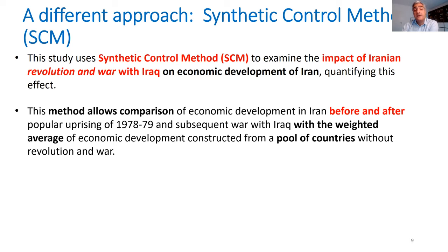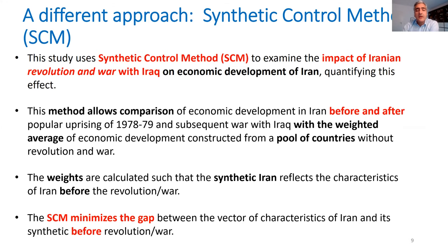I will also show the sensitivity checks we have done to ensure these estimations are as reliable as possible. The counterfactual Iran is based on a weighted average combination of different countries that are best able to predict the situation of Iran before the revolution. In our donor pool, not all countries receive equal weight to generate synthetic Iran. The model tries to find the optimum weights for the selected countries to produce a reliable counterfactual example of Iran.